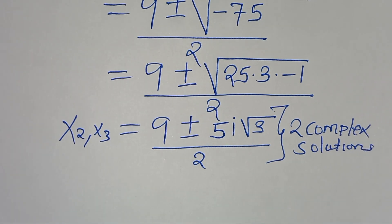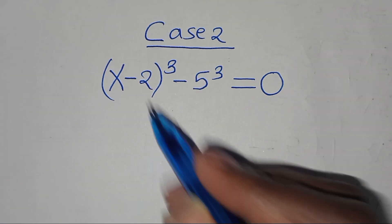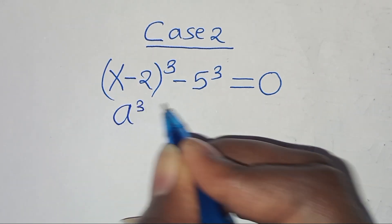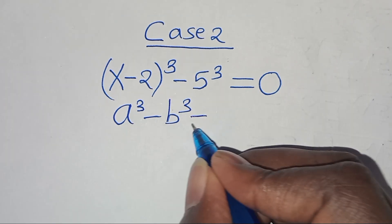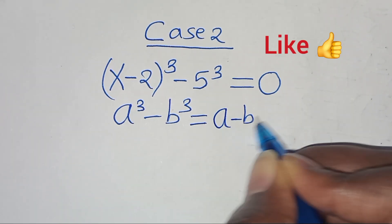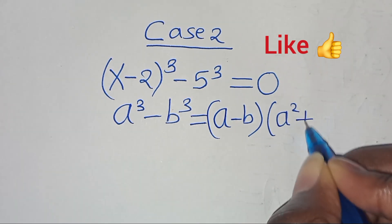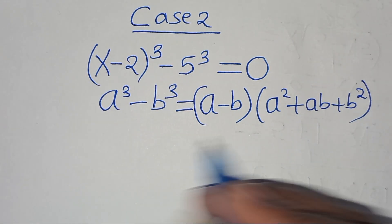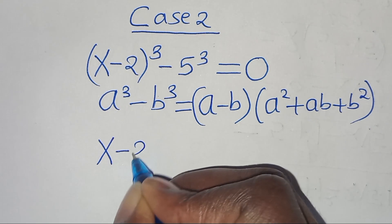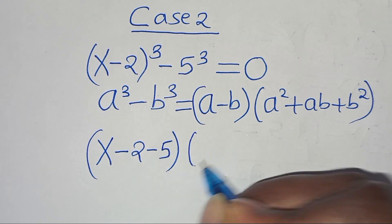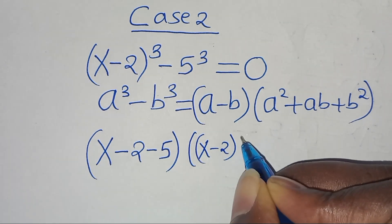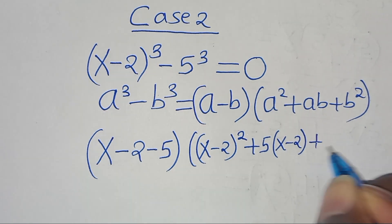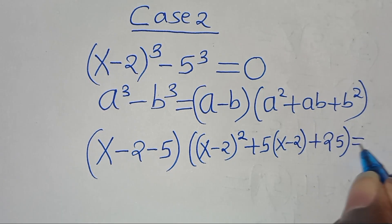In Case 2, we have (x minus 2)^3 minus 5^3 equals 0. This is a difference of two cubes in the form a^3 minus b^3, which factors as (a minus b)(a squared plus ab plus b squared). Applying this identity: (x minus 2 minus 5) times [(x minus 2)^2 plus 5(x minus 2) plus 25] equals 0.